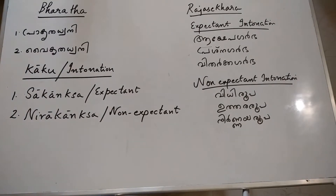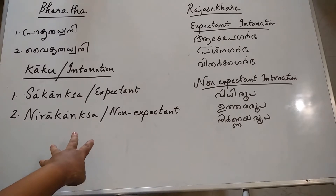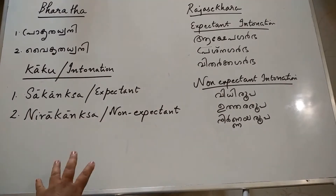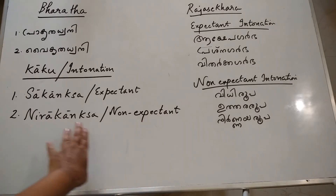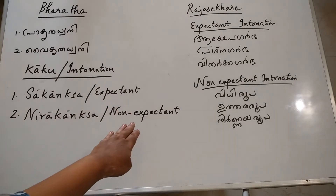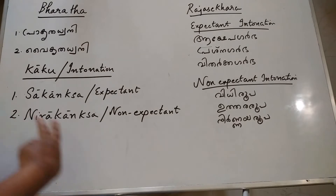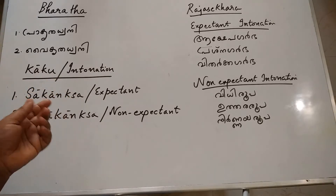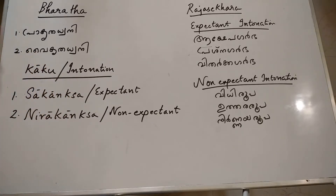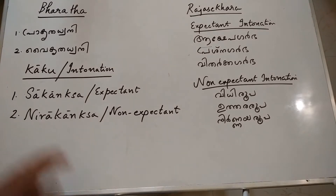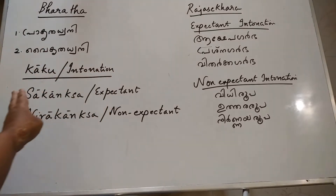A declarative sentence, a normal statement, is non-expectant — the sense is complete. For example, rising intonation: when we ask a question like 'Are you coming?' — that is a kind of expectant, a kind of Saagangshha. So Bharata classified Kaaku or intonation into two: Saagangshha or expectant, and Niragangshha or non-expectant.